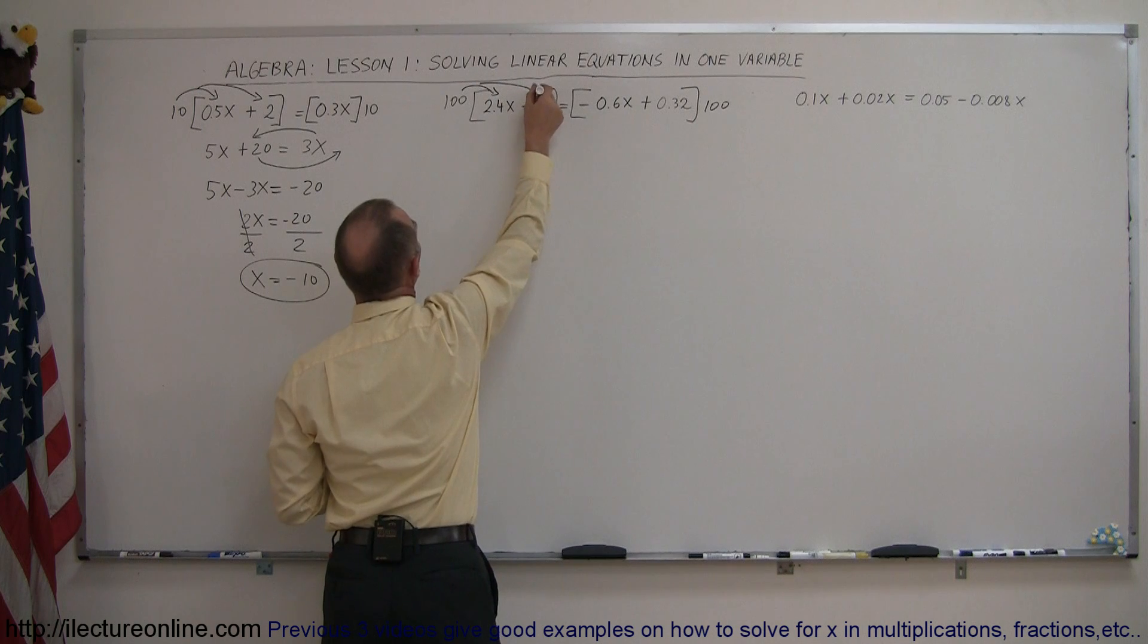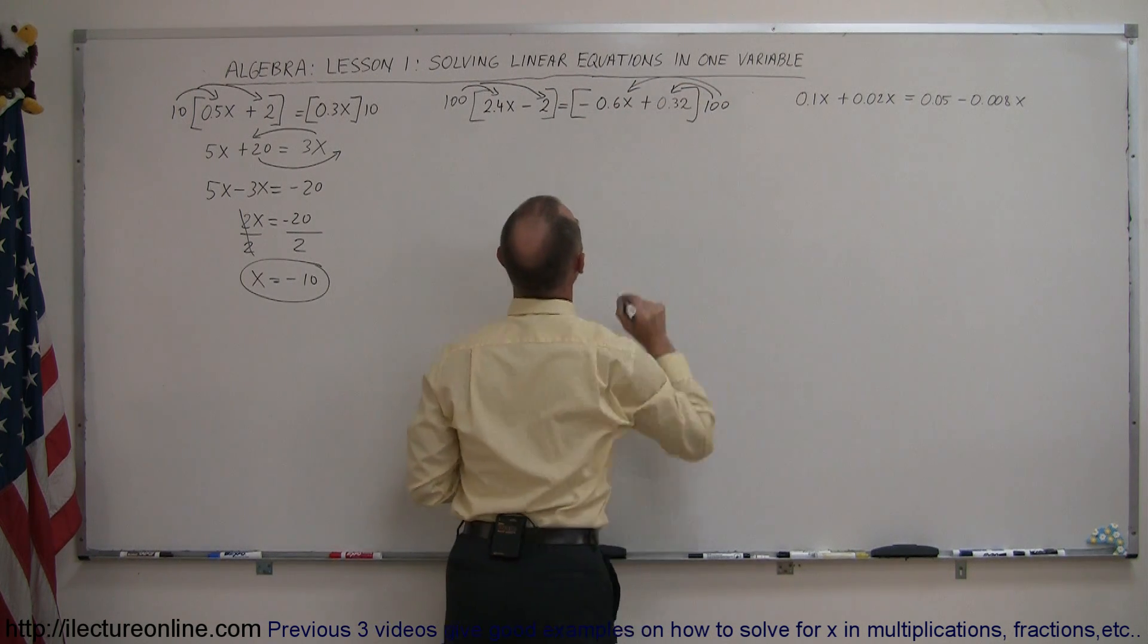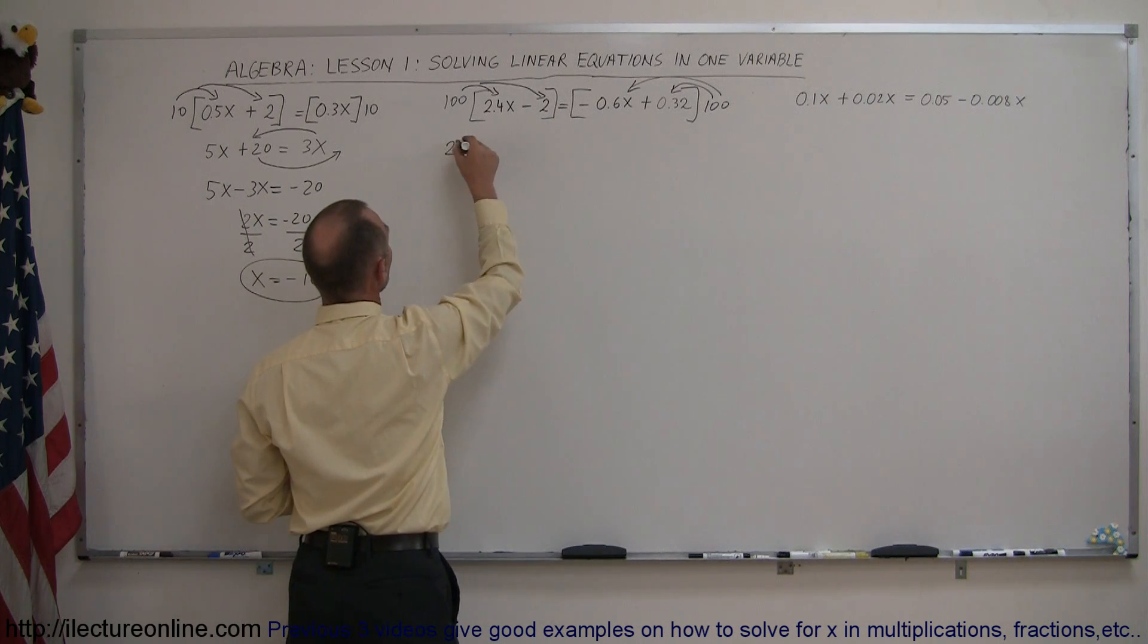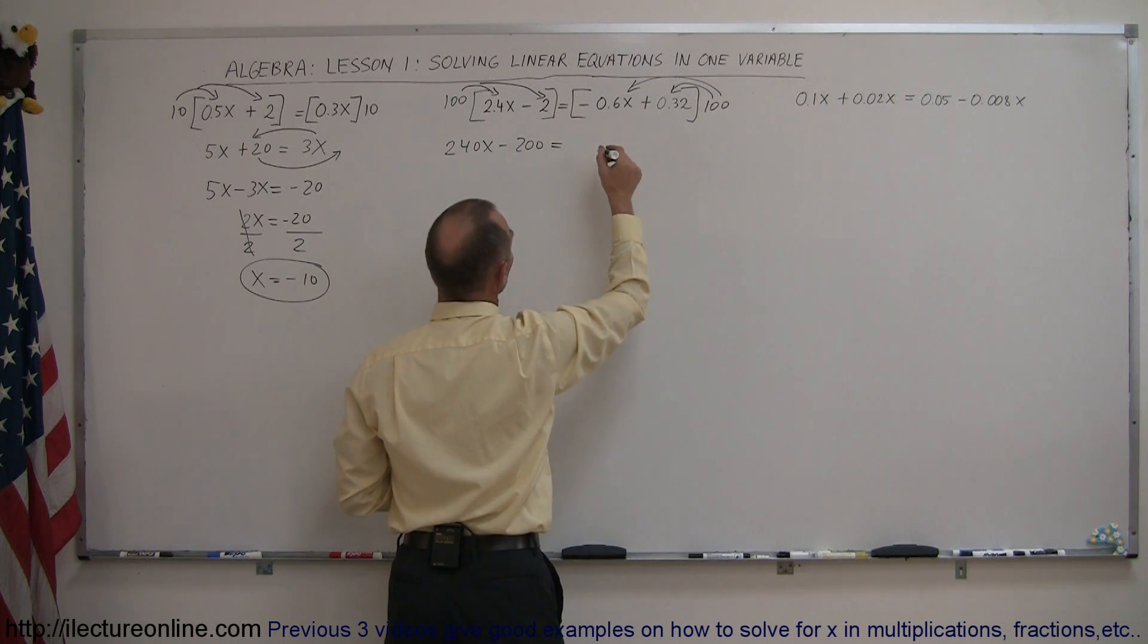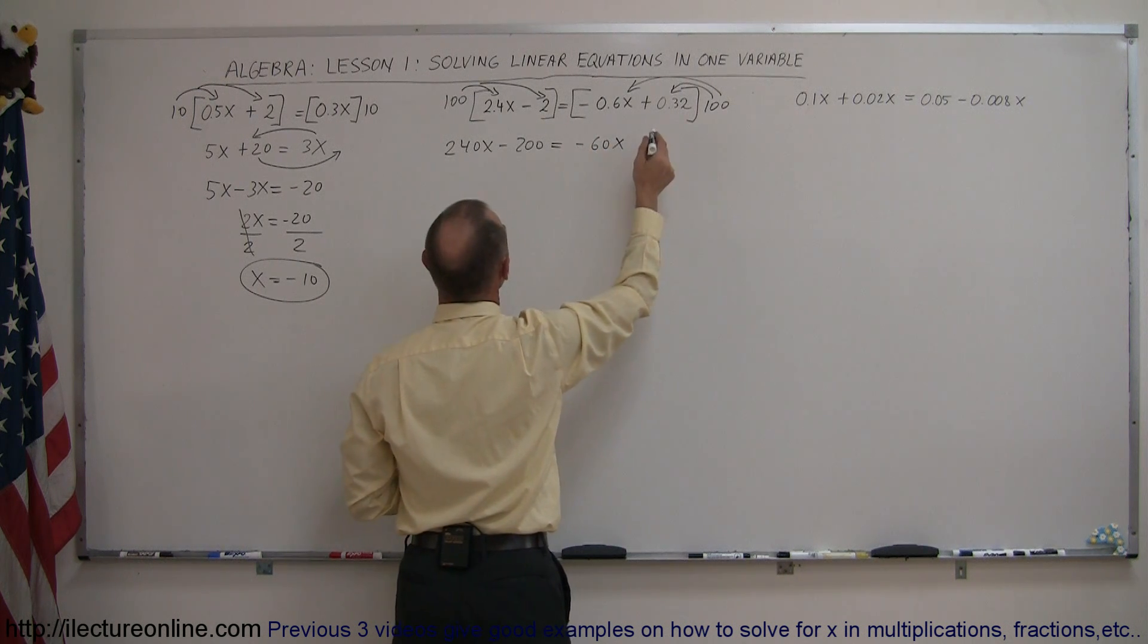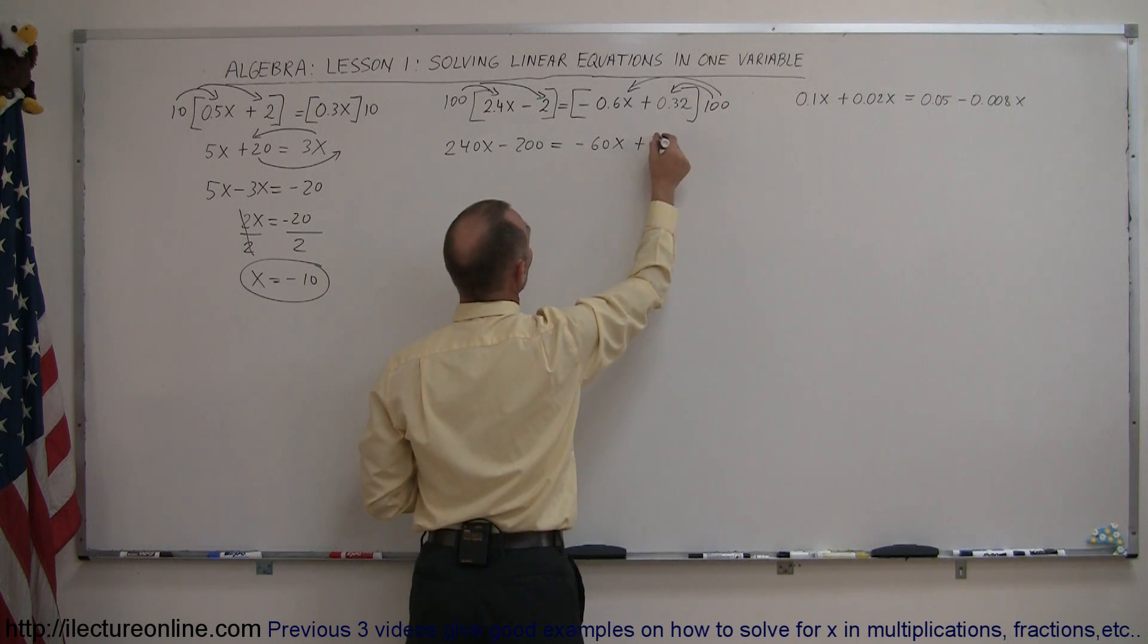When we distribute that over those two terms, what do we get? So 100 times 2.4x is 240x, 100 times minus 2 is minus 200, equals 100 times negative 0.6x is minus 60x, and 100 times 0.32 is plus 32.